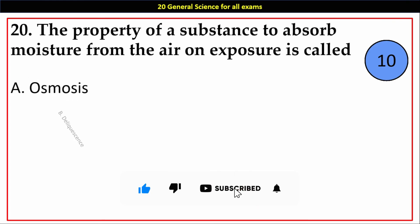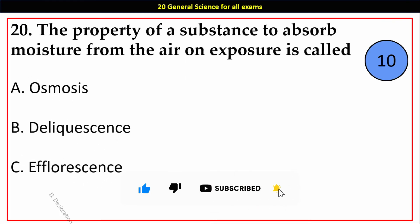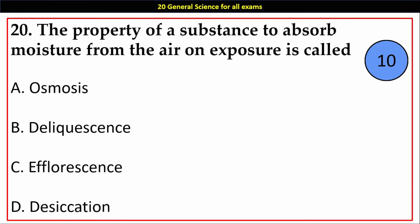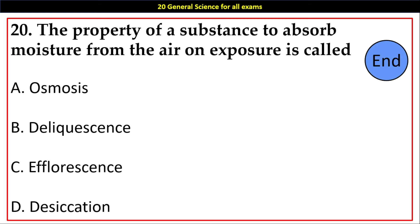Question number 20. The property of a substance to absorb moisture from the air on exposure is called: Options A. Osmosis, B. Deliquescence, C. Efflorescence, D. Desiccation. Answer: B. Deliquescence.